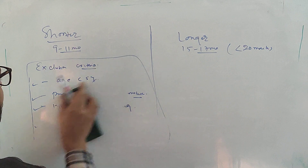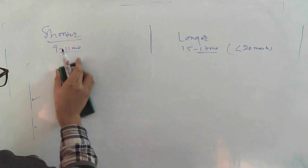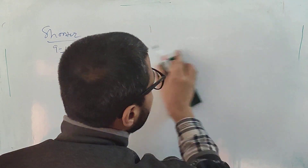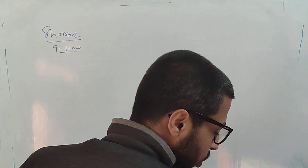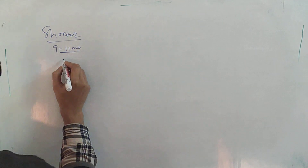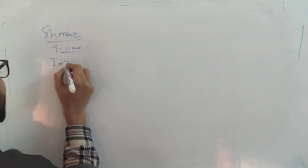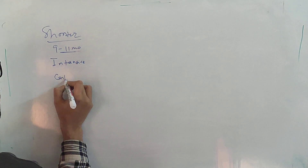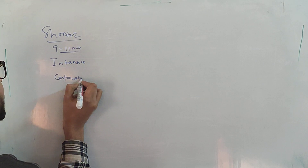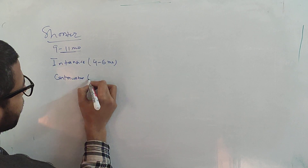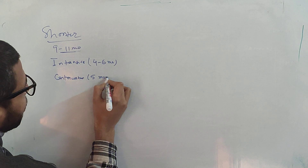Now let's talk about the drugs and duration for the shorter course regimen. The duration is 9 to 11 months, comprised of an intensive phase and a continuation phase. The intensive phase is 4 to 6 months, and the continuation phase lasts for 5 months.